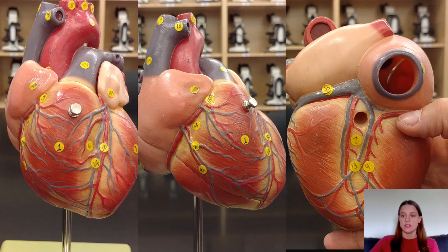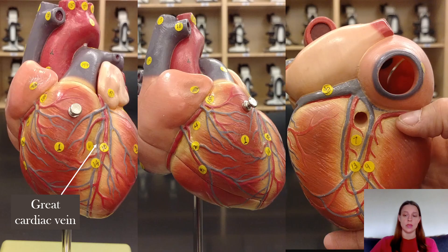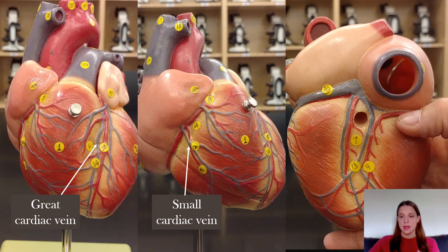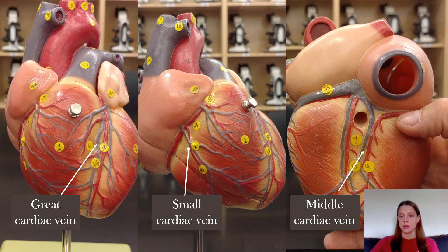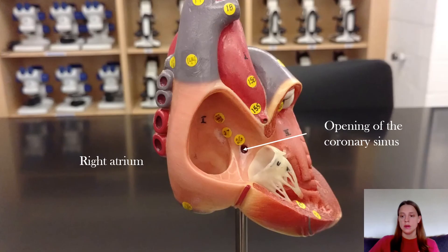Moving on to veins — veins are named for their size. In the front inside the anterior interventricular sulcus is the great cardiac vein. Next to the marginal artery is the small cardiac vein. And in the back in the posterior interventricular sulcus is the middle cardiac vein. All of those veins meet up and empty into the coronary sinus, which as mentioned earlier opens to the inside of the right atrium.